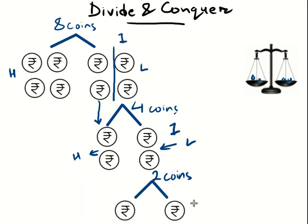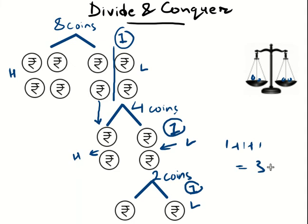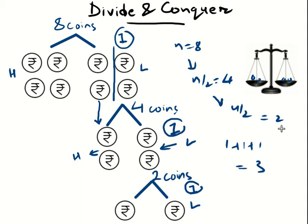With two coins remaining, place them on the balance — one more weighing. Whichever is lighter is the fake coin. So that is one weighing with eight coins (four each), one weighing with four coins (two each), and one weighing with two coins (one each): one plus one plus one equals three weighings. By performing three weighings we can guarantee finding the fake coin — better than the brute force method.